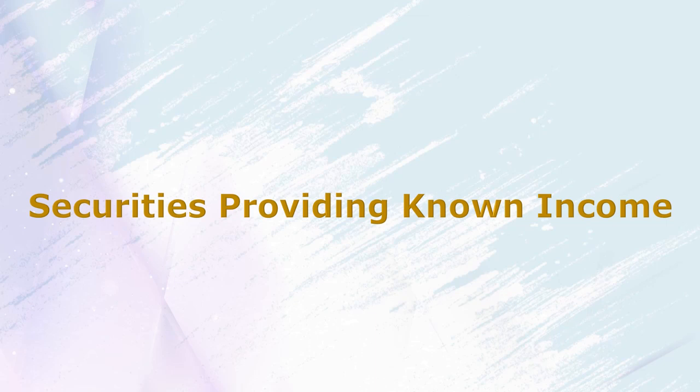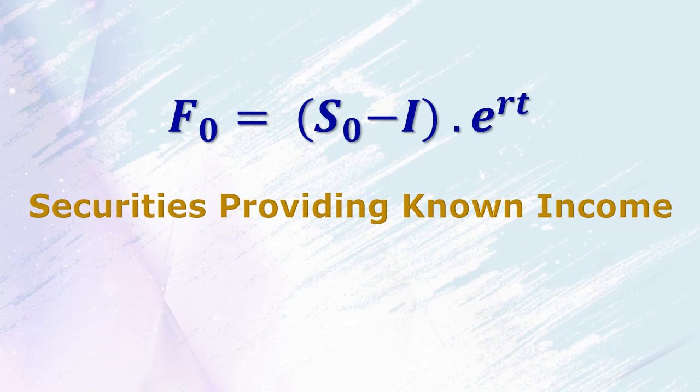In the previous case there was no income-related information, meaning the security was not providing any income during the holding period. But in this case, where we know for certain that the security is providing a fixed income in the form of dividend or interest, how do we value the forward or futures contract? To do that, we have a formula: F₀ equals S₀ minus I, into e to the power rt. We are using a continuously compounding rate of interest for the forward period.